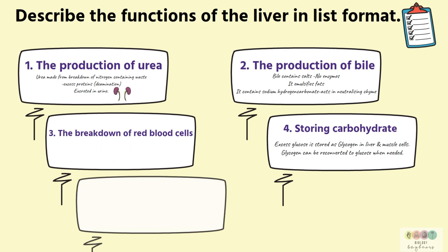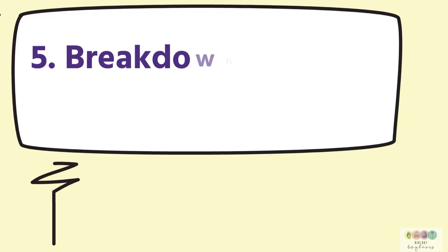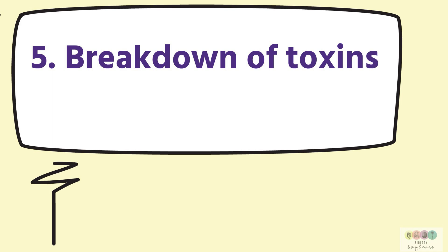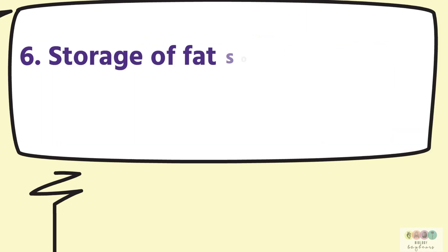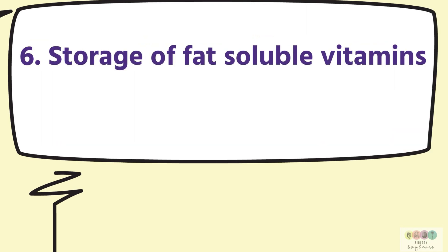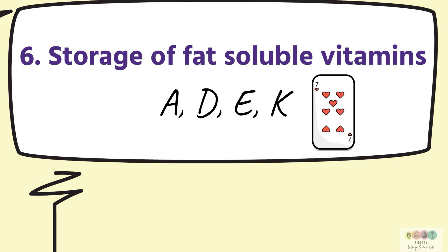Number five is the breakdown of toxins, a very important role of the liver. Number six is the storage of fat-soluble vitamins — vitamins A, D, E, and K — and we remember them by saying 'a deck of cards.'